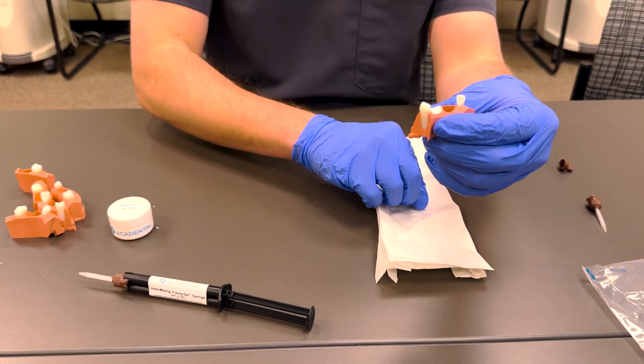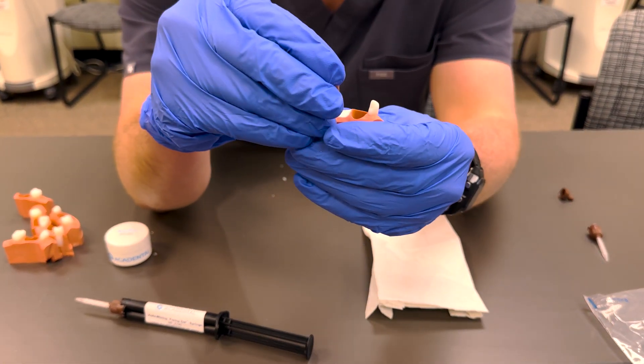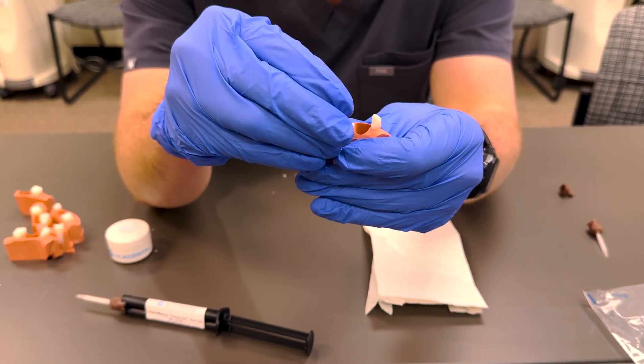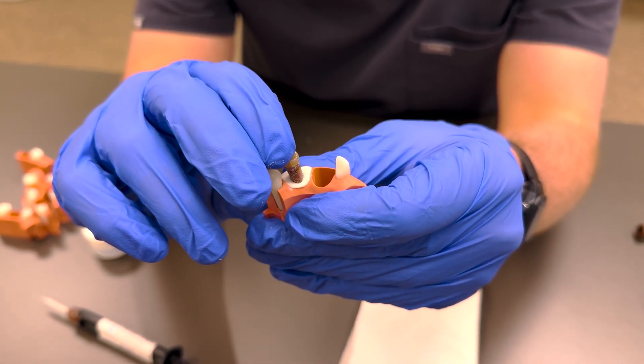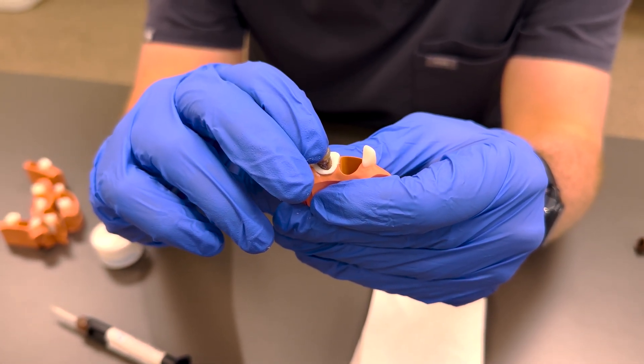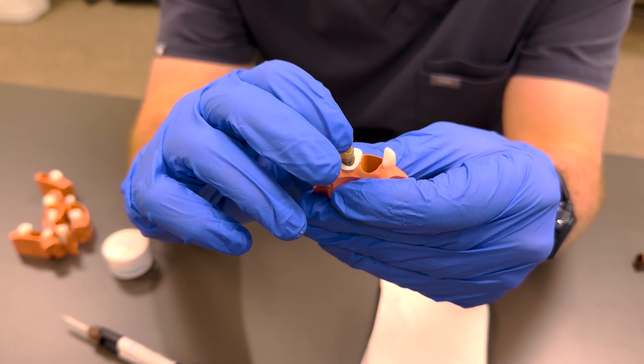From here, you're going to take your extracted tooth and place it into the apex putty. Try to center it a little bit and slowly push it down like this. Sometimes when the roots are longer it can be more difficult to get it all the way down, but try to set the occlusal plane similar to the adjacent teeth.